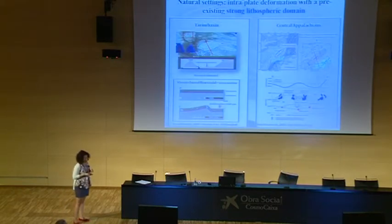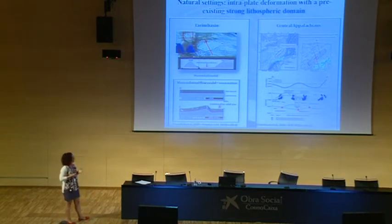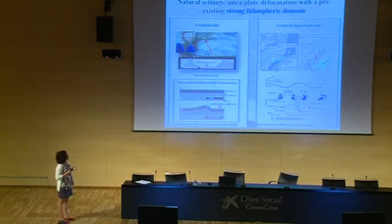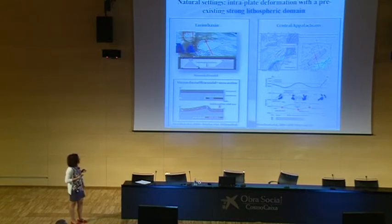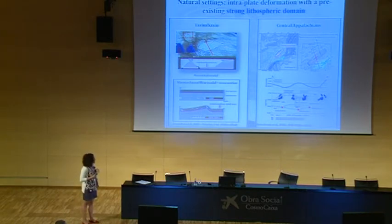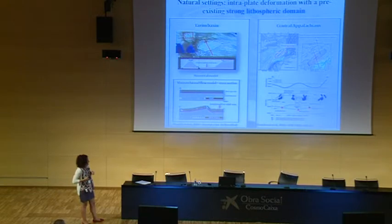We also observe in nature settings where there are strong lithospheric blocks in continental lithosphere and strain localizes around these blocks. Two examples: the Tarim Basin, considered strong due to its low geothermal gradient and tectonic age, with mountain chains surrounding it; and in North America, the Appalachian orogen, where seismic and gravity data reveal a strong lower crustal underplating material. The orogen, thin-skinned and wide, becomes narrow and more thick-skinned just in front of this strong block.